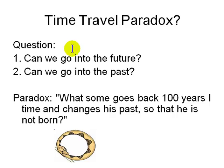The time travel paradox asks: can we go into the future, and can we go into the past? If someone goes 100 years back and changes their past so they are never born, that's a contradiction. This paradox is resolved by saying we cannot go into the past. Going into the future, however, is theoretically possible — traveling near the speed of light or being frozen. In fact, we are all going into the future. The past no longer exists; it exists only in your mind once it's gone.